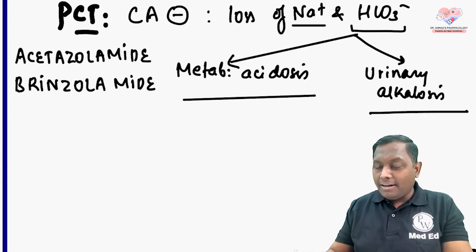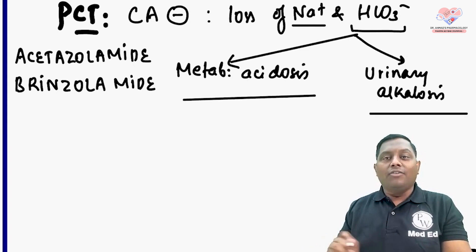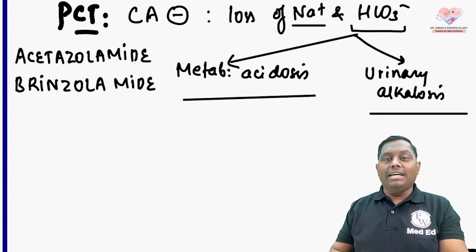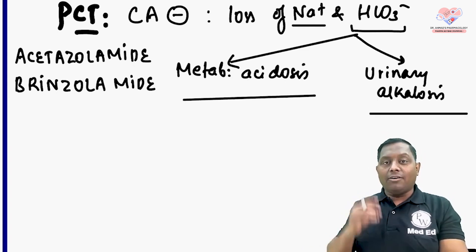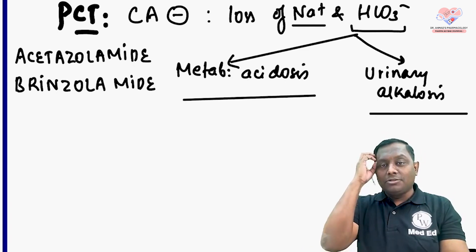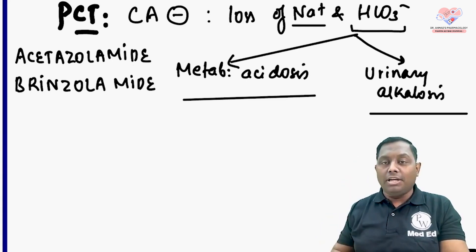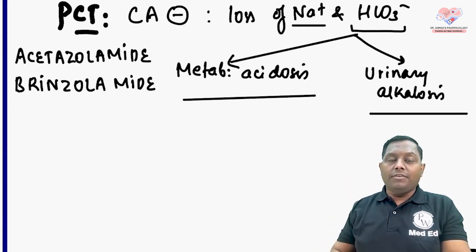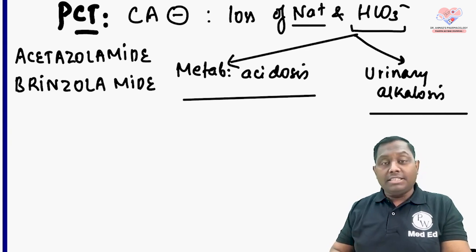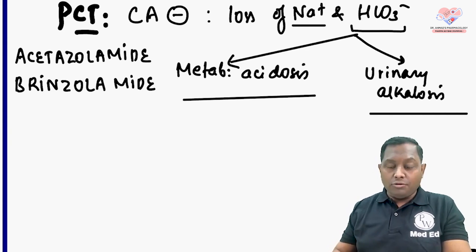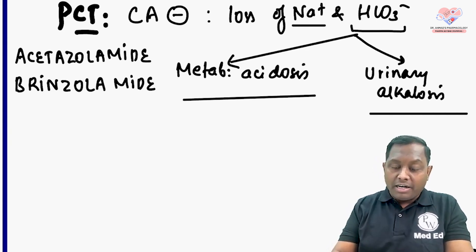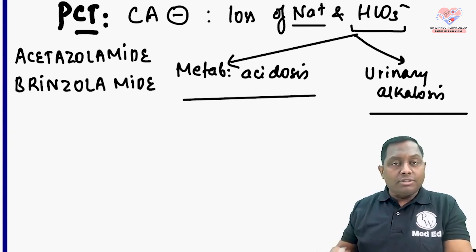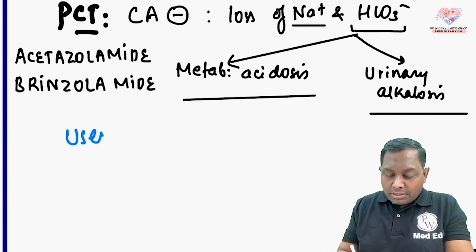Carbonic anhydrase inhibitors are urinary alkalinizers — they cause alkalinization of the urine. That is why they are also used in patients with acidic drug poisoning.